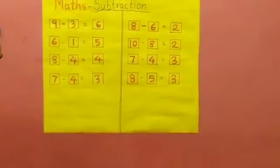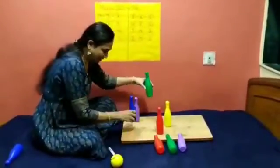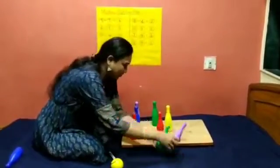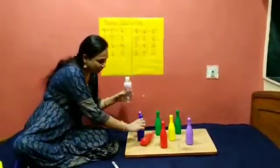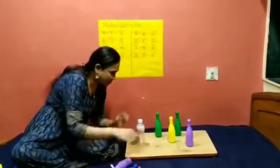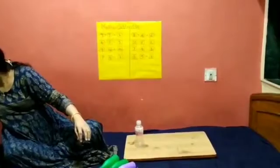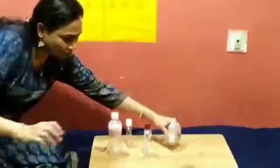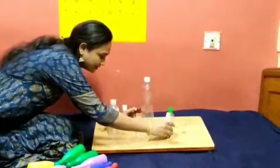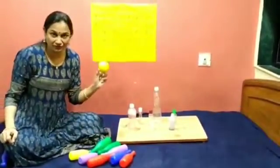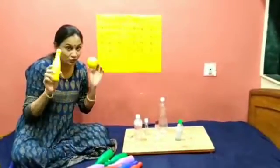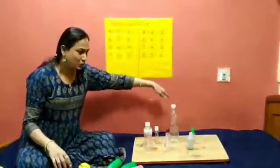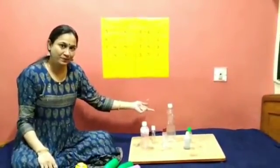So practice this game. You can use these bottles, or you can use empty bottles at home. Whichever bottles are there at your home, keep those empty bottles and play the game. You can also make a ball using a handkerchief if you don't have one. Don't ask your parents to buy new things — you can use old things and play your game. Thank you.